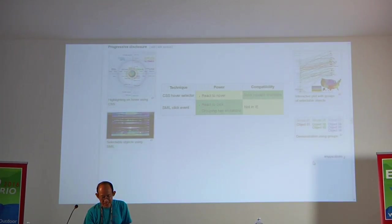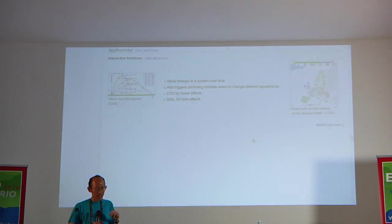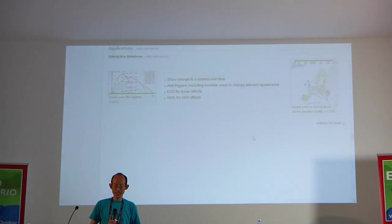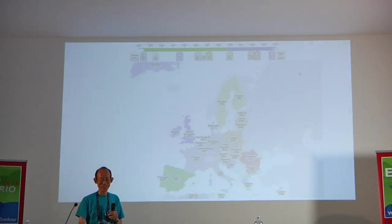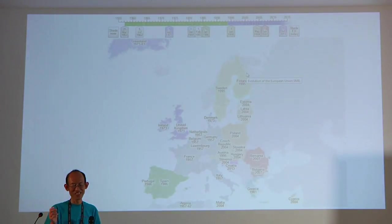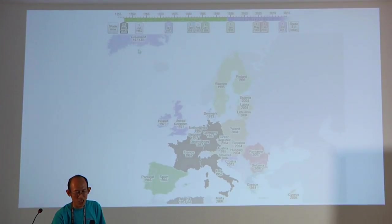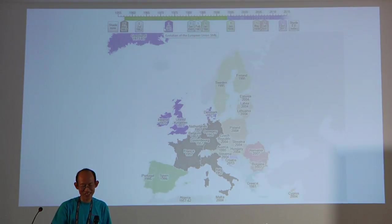Now for applications. Interactive timelines show a change in a system over time — the time could be years or even seconds. For years, this diagram shows the members of the EU — when members joined and left. I need to update it soon. For example, in 1957 these countries joined, in 1962 Algeria left, in 1973 the UK and company joined, and so on.